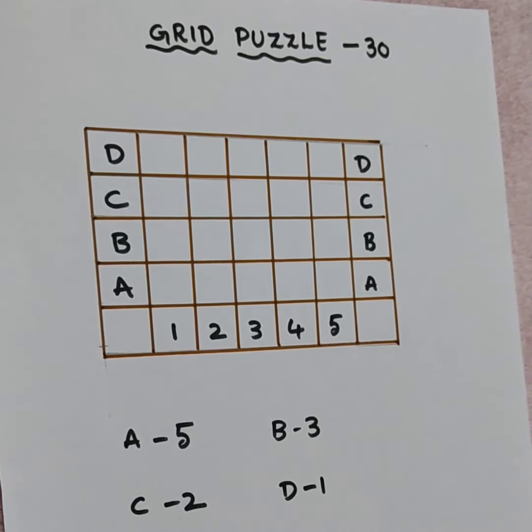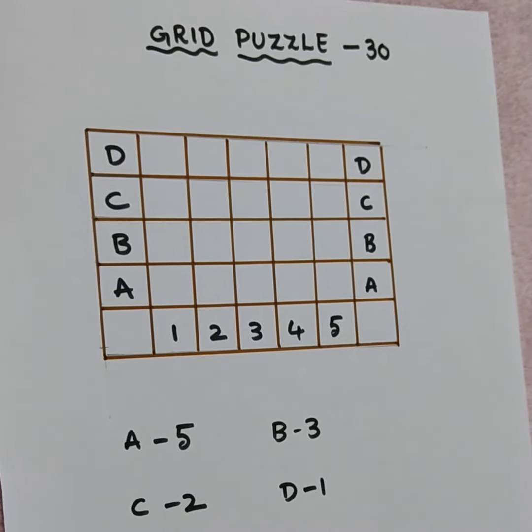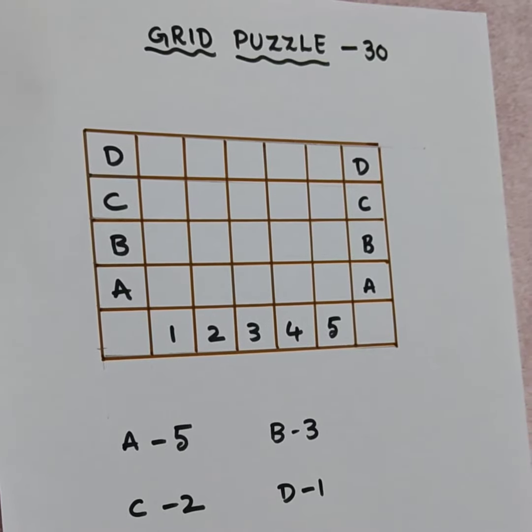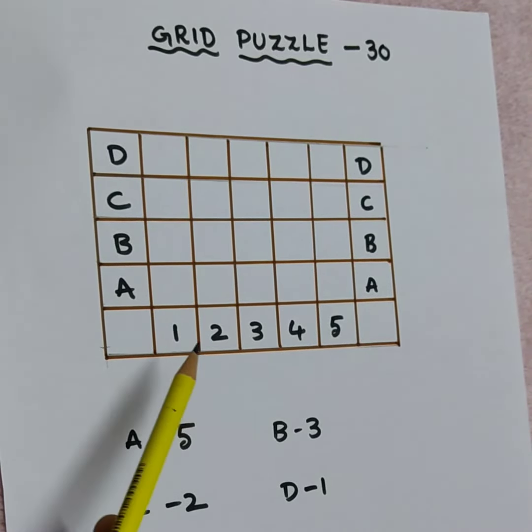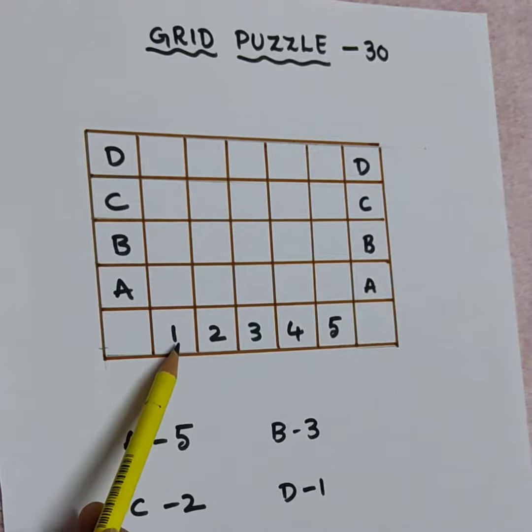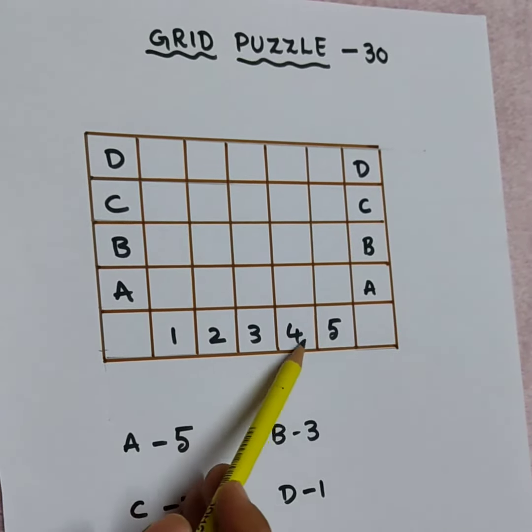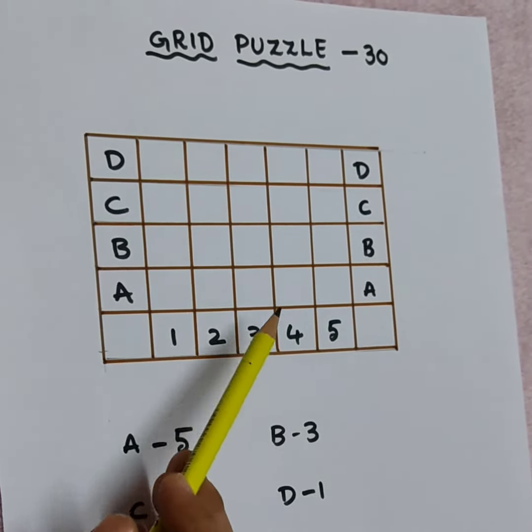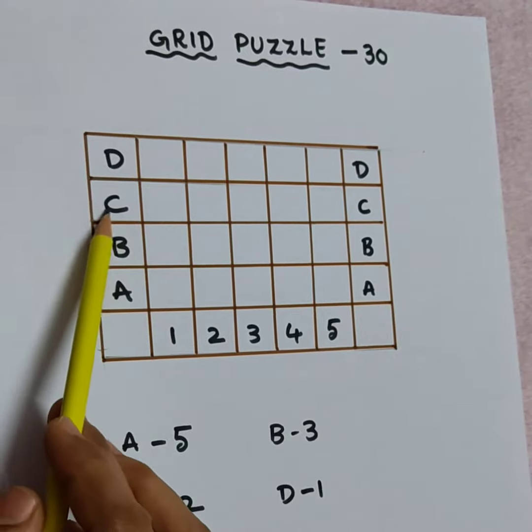Hi kids, worksheet number 30, that is grid puzzle. Here I written 1, 2, 3, 4, 5 numbers. I wrote A, B, C, D.